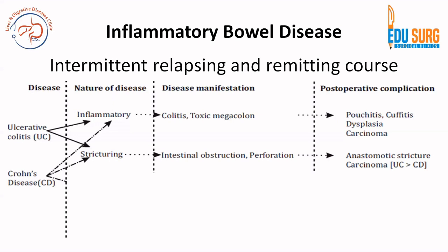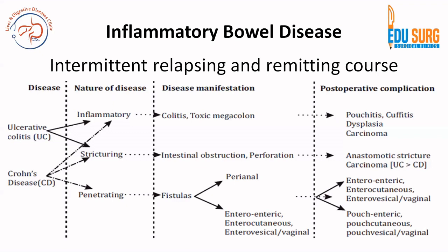The second type is stricturing disease, which is more common in Crohn's disease but also seen in ulcerative colitis. When you have a stricturing nature of disease, the manifestation can be intestinal obstruction, and if untreated, this can result in perforation. Post-operatively, the complication will be anastomotic stricture and carcinoma — noting that carcinoma is more common in ulcerative colitis compared to Crohn's disease.